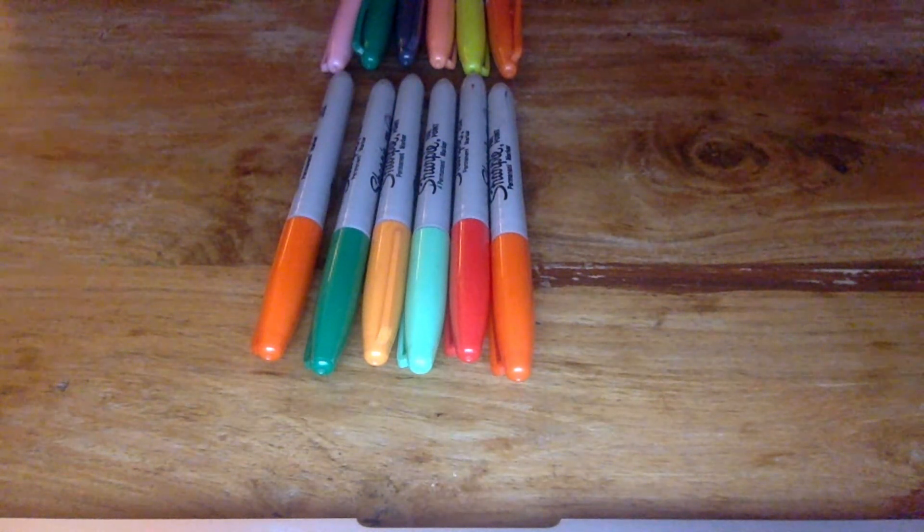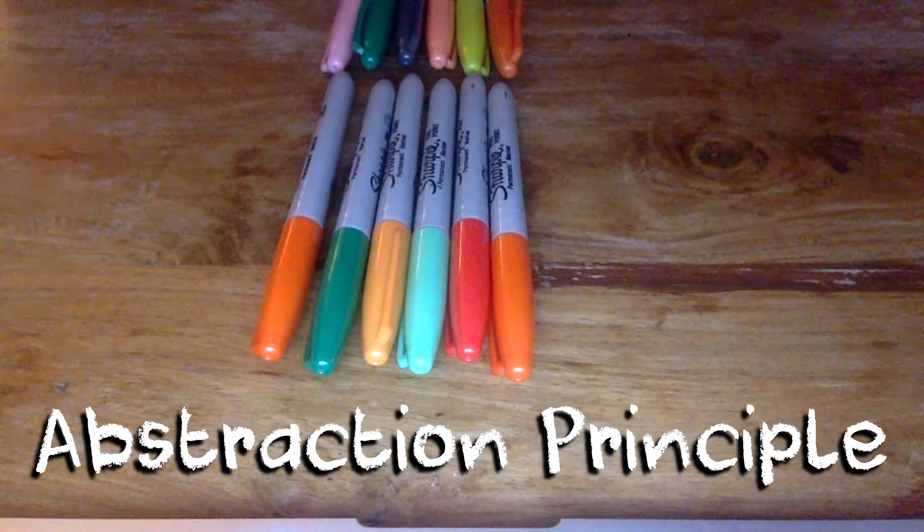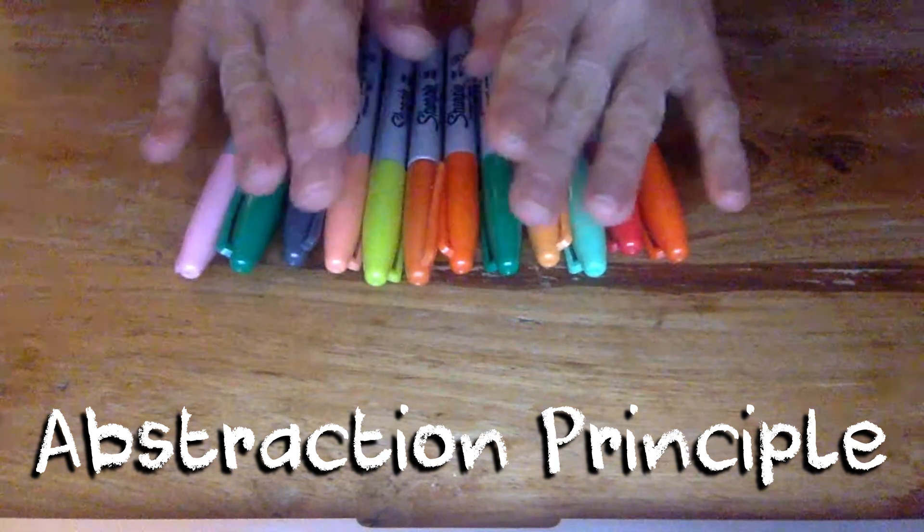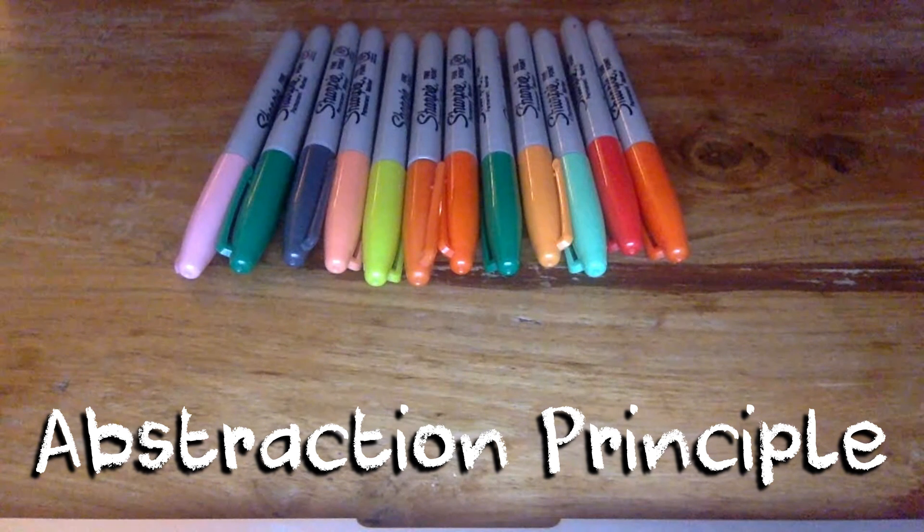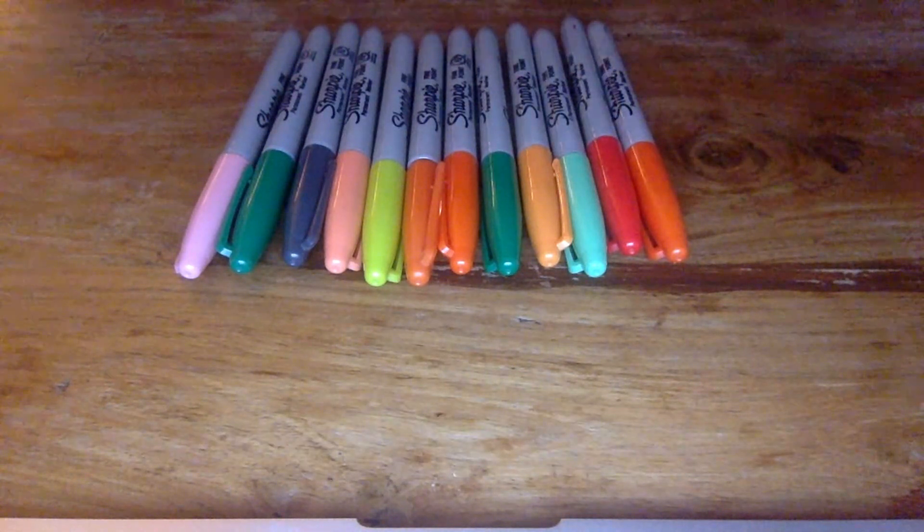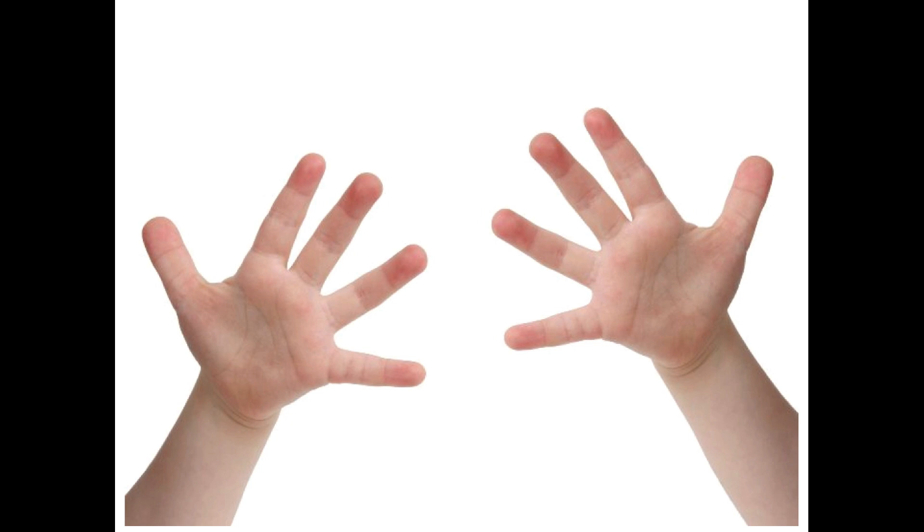And then finally you have the abstraction principle that anything can be counted, even things that can't be touched and moved, such as jumps, hops or claps. Okay, so there's a lot to think about there.